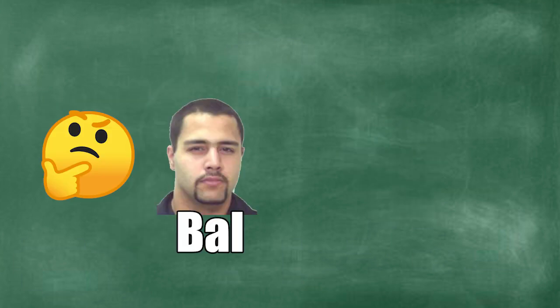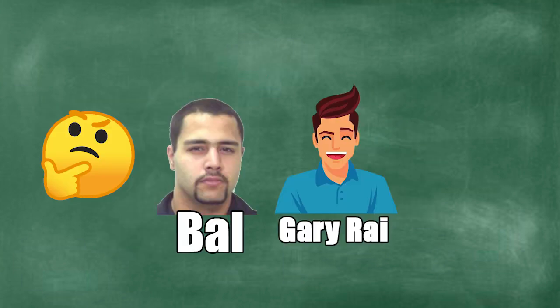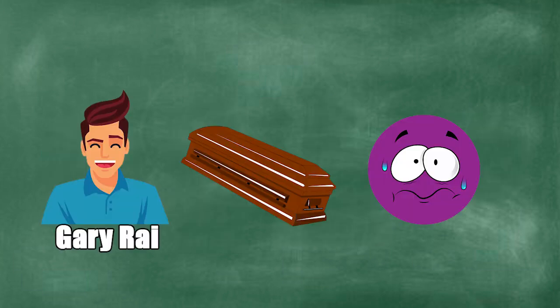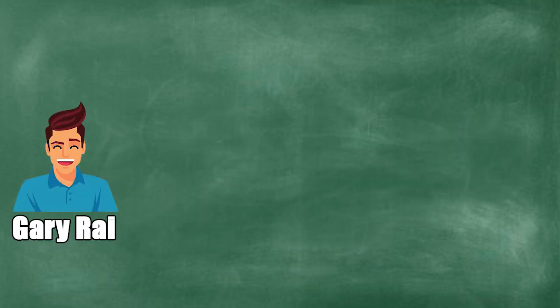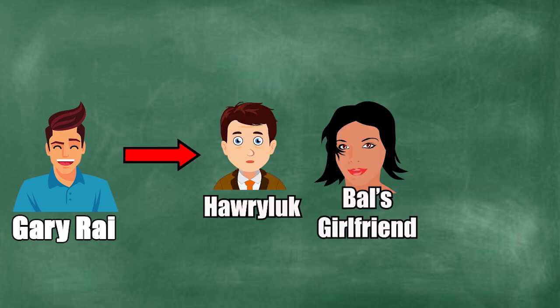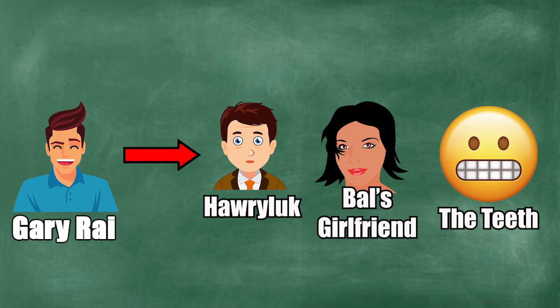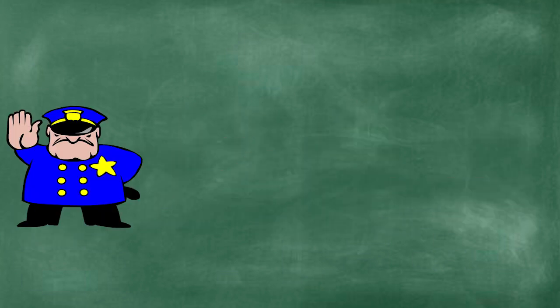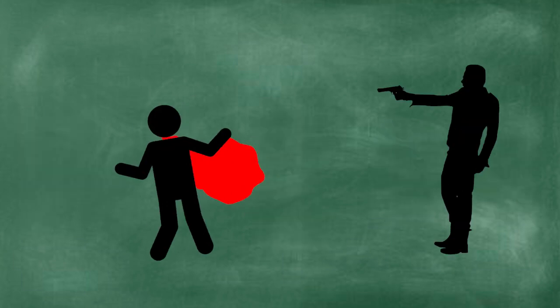Thinking back, Bal believed it was his close friend, Rai, that planned the attempt on his life. Ironically, Rai lost his life on that dreadful day. Besides Rai, others involved in the assassination attempt were Bal's former associate Horoluck, Bal's girlfriend, and another mysterious individual called, The Teeth. Horoluck was found dead two weeks later. The authorities believe it was Bal's men that killed him to avenge their boss.